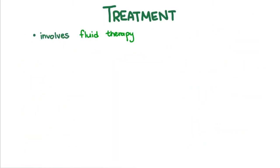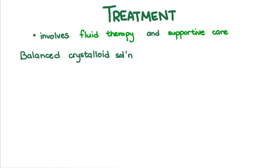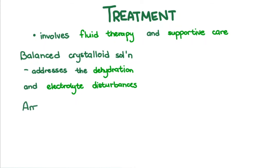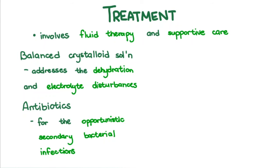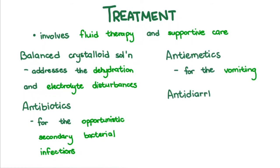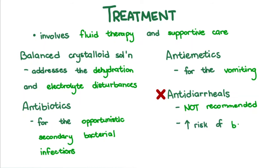Treatment involves fluid therapy and supportive care. A balanced crystalloid solution should be given to address the dehydration and electrolyte disturbances. Antibiotics are indicated for the opportunistic secondary bacterial infections brought about by the neutropenia, as well as the weakened gut mucosal barrier. Antiemetics are indicated for the vomiting. Antidiarrheals, however, are not advised, because we do not want the intestinal contents to remain in the gut, where they increase the risk of bacterial invasion in the compromised mucosa.